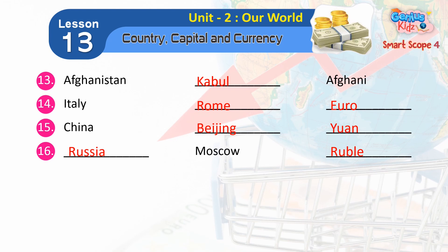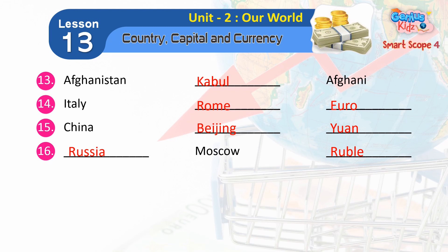15. China — Beijing — Yuan. 16. Russia — Moscow — Ruble.